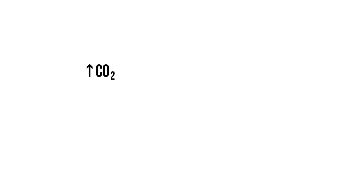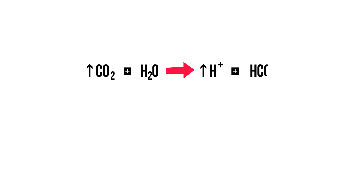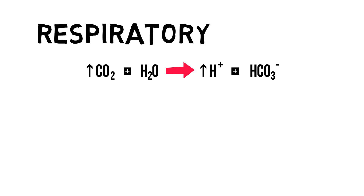When there is an increase in carbon dioxide, the Henderson-Hasselbalch equation teaches us that the equation shifts to the right, increasing hydrogen ions in our body and thus becoming more acidic. This is respiratory acidosis.